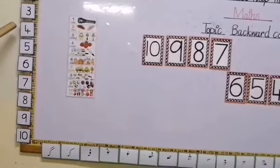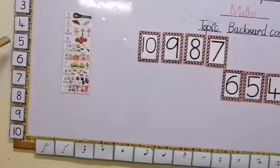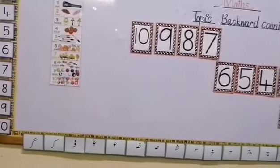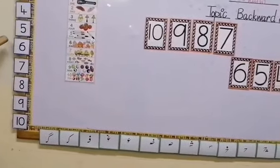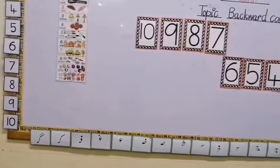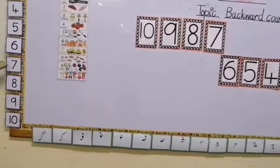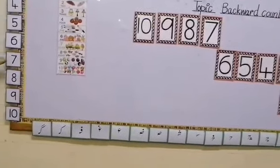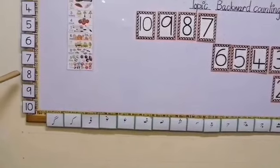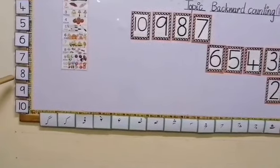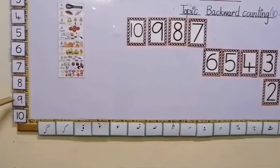And what comes after 4? Number 5. Very good. And what comes after number 5? Number 6. Yes. And what comes after number 6? Number 7. And what comes after number 7? It's number 8. And what comes after number 8? Number 9. Yes, you're absolutely right.